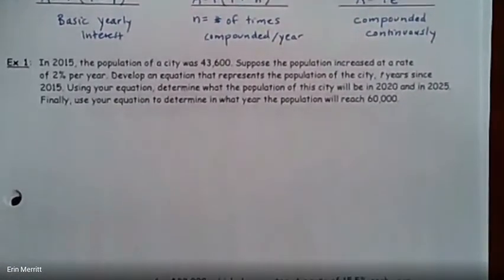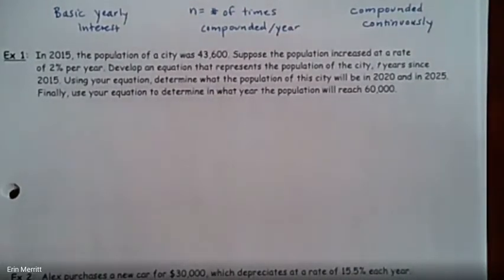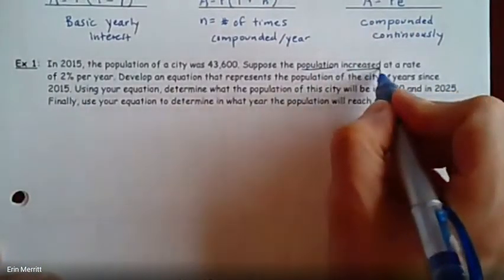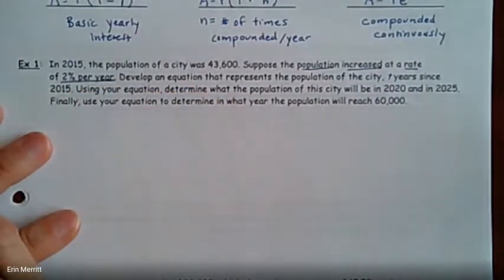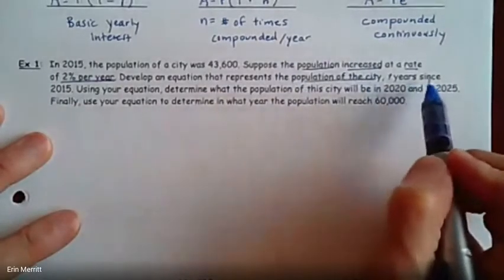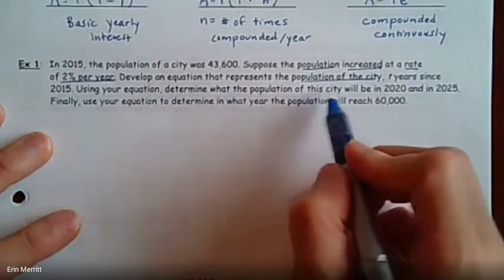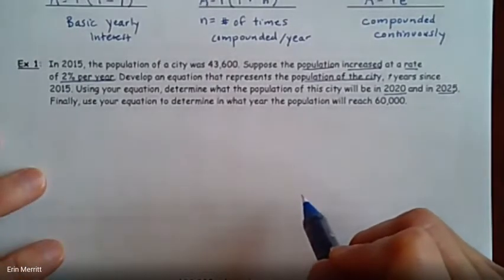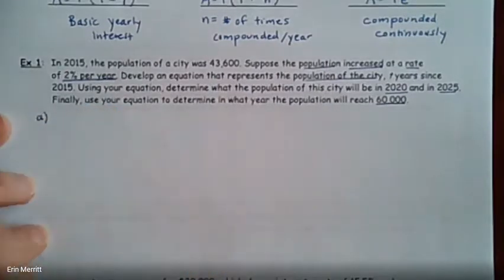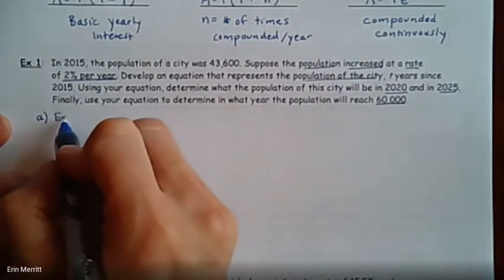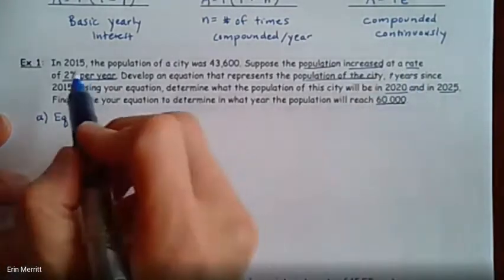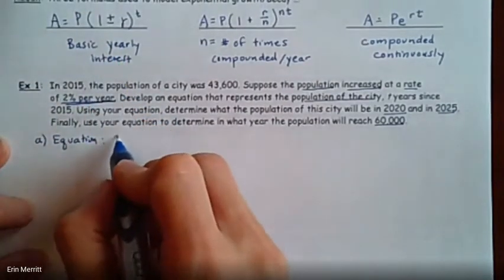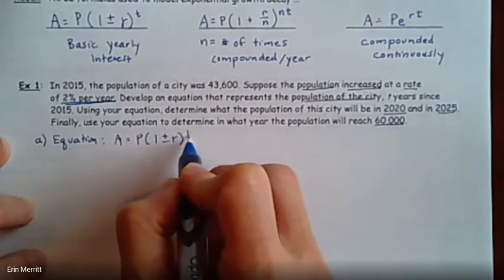I'm going to jump right in with the first example. In 2015, the population of a city was 43,600. Suppose the population increased at a rate of 2% per year. Develop an equation that represents the population of the city, t years since 2015. I'm going to break it up as parts A, B, and C. For part A, you're asked for the equation. Because it says it's increasing at a rate of 2% per year, I'm going to use that first formula.